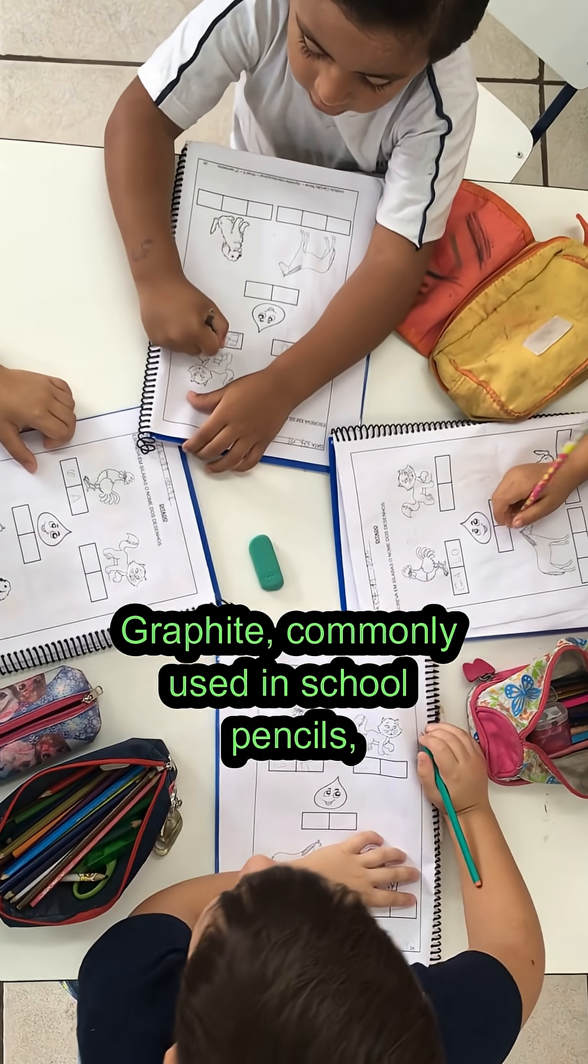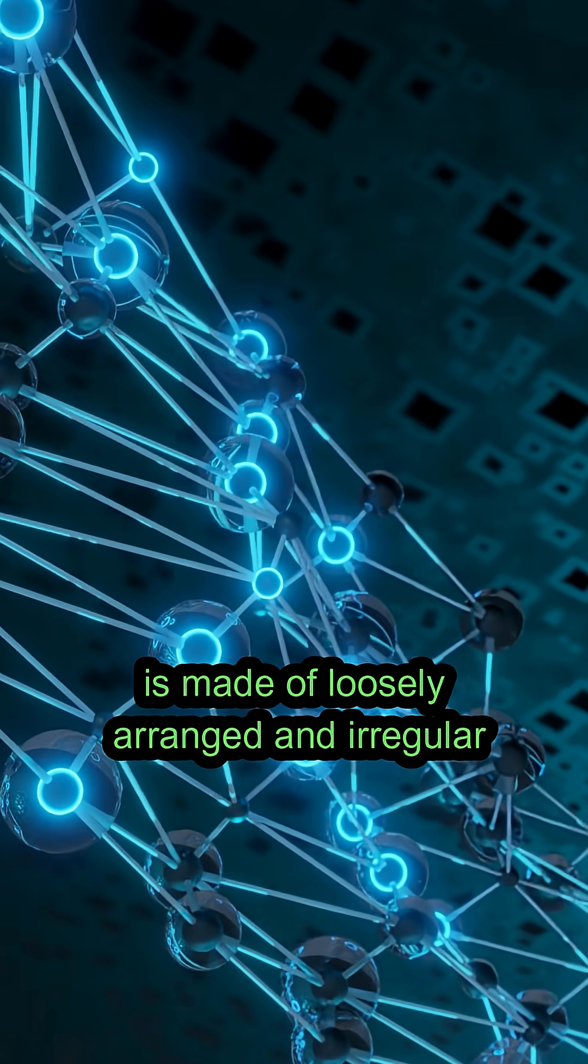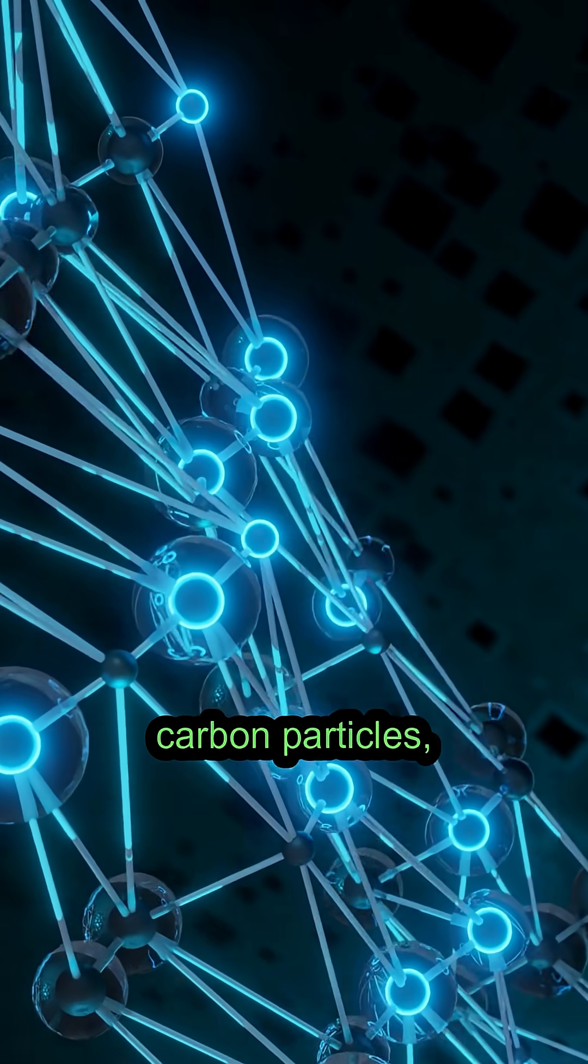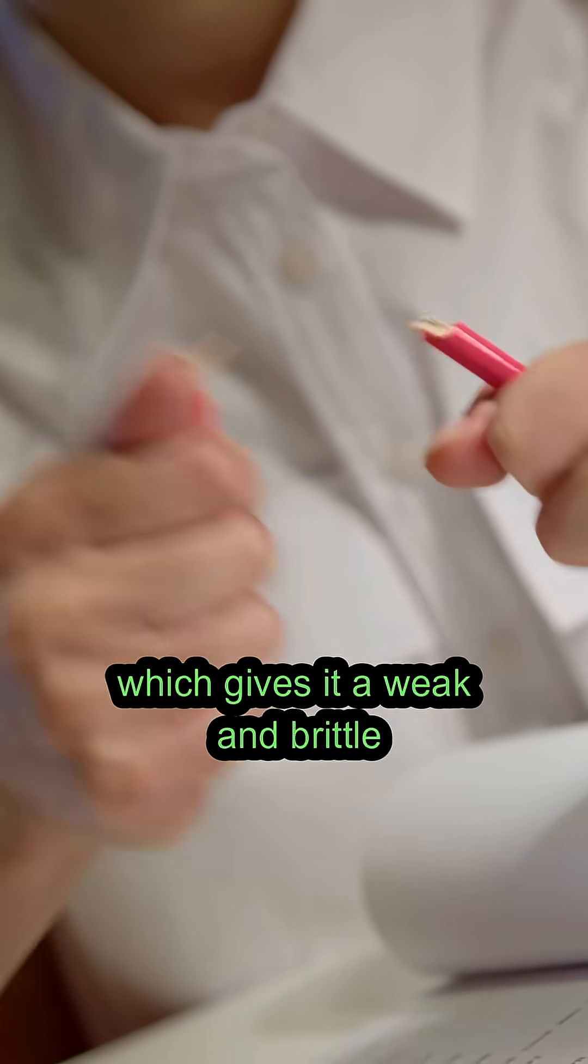Graphite, commonly used in school pencils, is made of loosely arranged and irregular carbon particles, which gives it a weak and brittle structure.